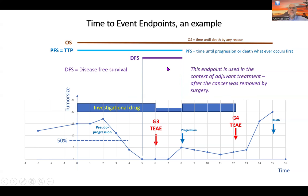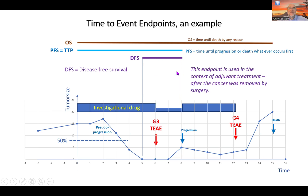Disease-free survival, DFS, is sometimes used, but it wasn't part of our protocol because our patients didn't start being disease-free. DFS is used in adjuvant treatment when cancers are resected first — the surgeon has taken care of it, it's not visible — and then you give a drug to prevent it from coming back. That's called adjuvant treatment, and disease-free survival is meaningful in that context. In that setting, it actually means the same thing as progression-free survival, so it's somewhat redundant.